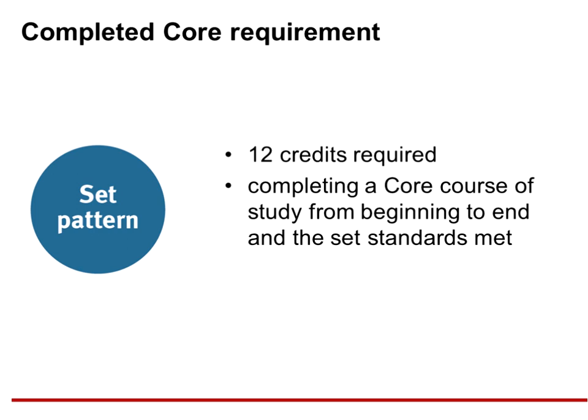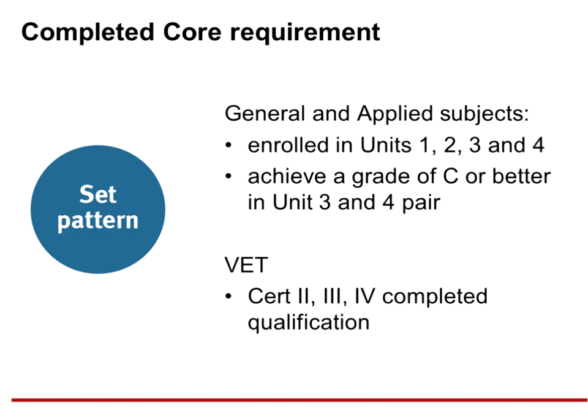The completed core requirement of the QCE is often a point of confusion. The purpose of this requirement is that students see a number of their courses the whole way through, from beginning to end. Credit will accrue when the set standard is met — for example, a grade of C or better. For general and applied subjects, to contribute credit to the completed core requirement, a course must be enrolled in its entirety and students need to achieve a grade of C or better for the Unit 3 and 4 pair. VET qualifications must be successfully completed to contribute to the completed core requirement — no partial credit can contribute. Credit can contribute to the QCE if the set standard is met for partial completion, however will only contribute to completed core when those criteria are met.